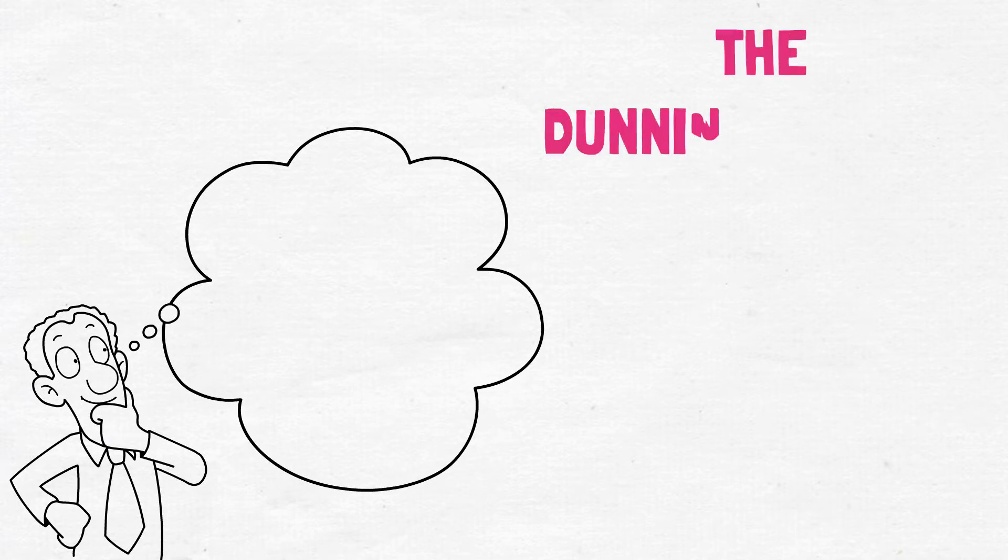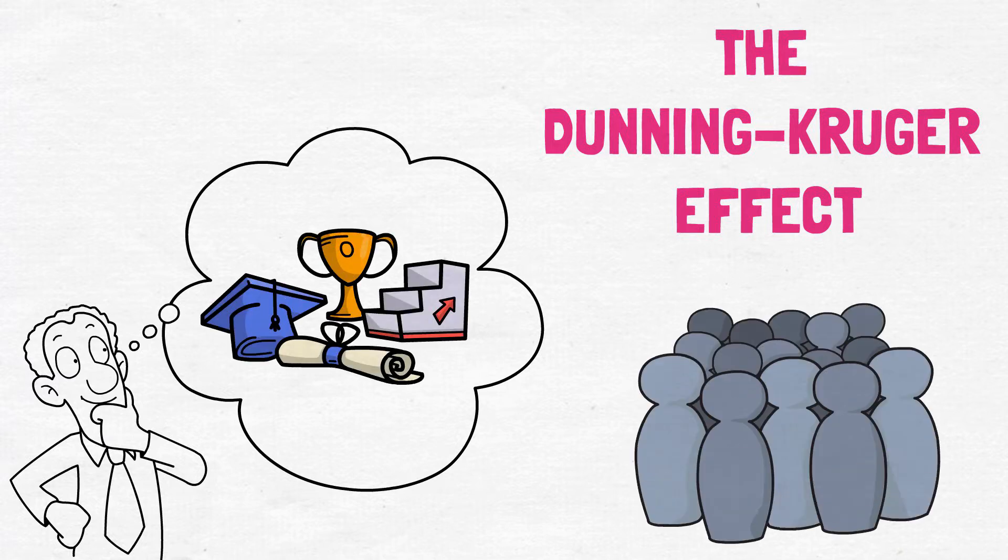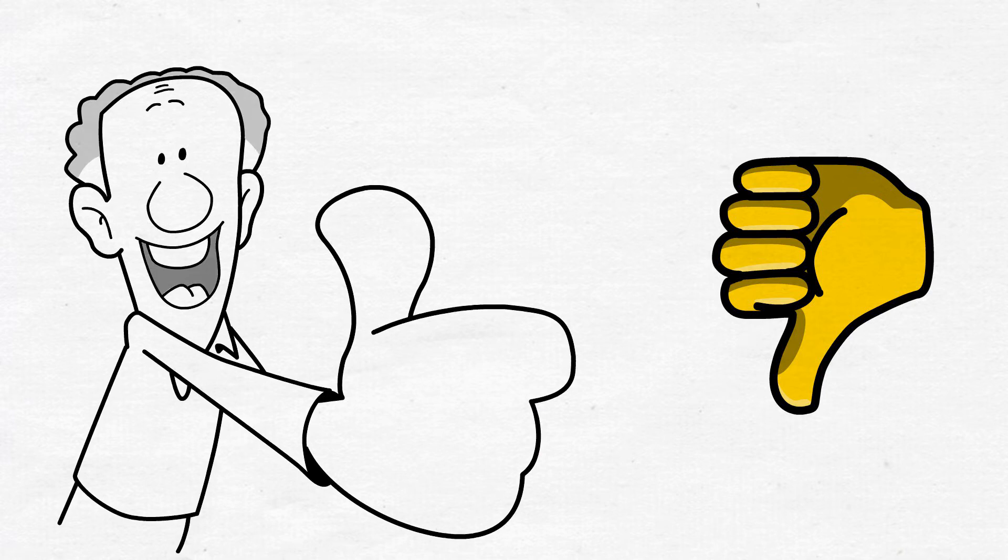It is a cognitive bias known as the Dunning-Kruger Effect where people overestimate their abilities, even if the truth is visible to everyone else. Additionally, people with low self-esteem also tend to humiliate others, and that makes them feel good about themselves.